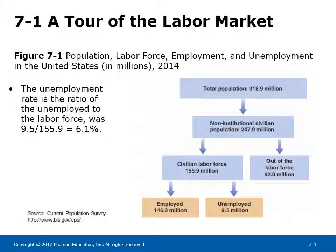The non-institutional civilian labor force was 155.9 million. The civilian labor force equals people employed plus people unemployed. People employed full time or part time are considered employed. People not working but who have looked for work in the past four weeks are considered unemployed. Those not looking for work are considered out of the labor force. The labor force participation rate is the ratio of the labor force to the non-institutional civilian population. The non-employment rate equals the non-institutional civilian population minus those employed, divided by the non-institutional civilian population.